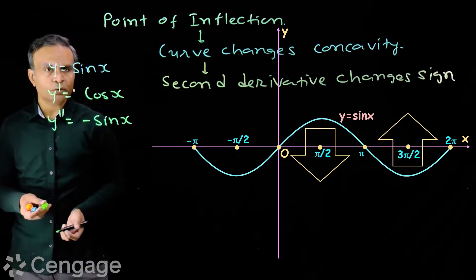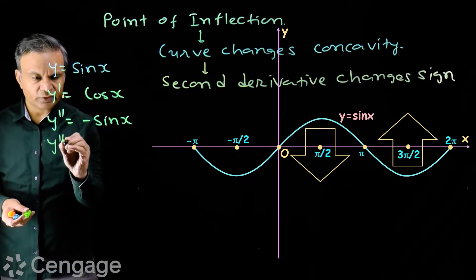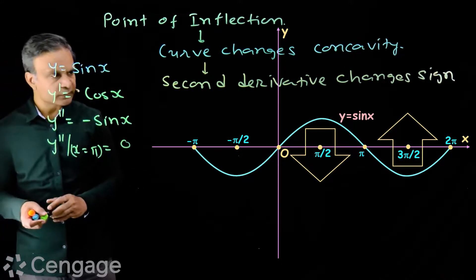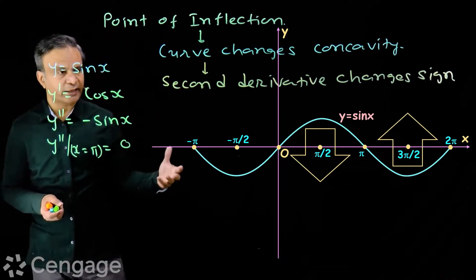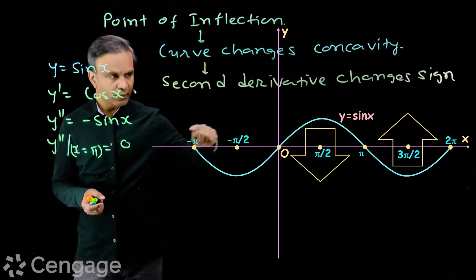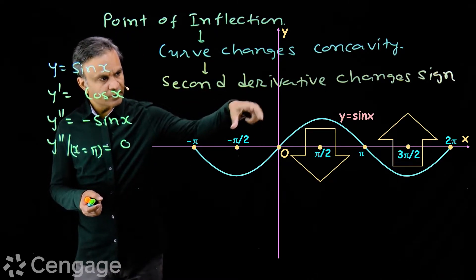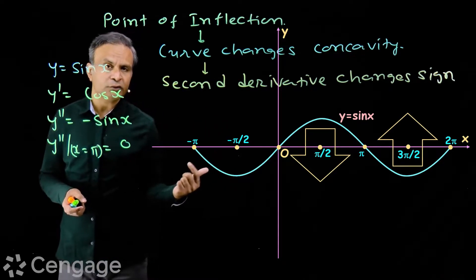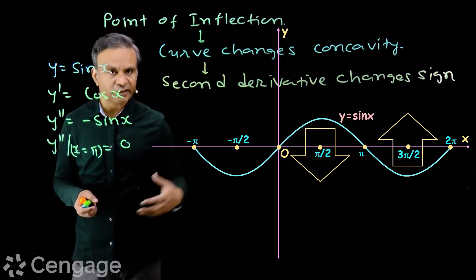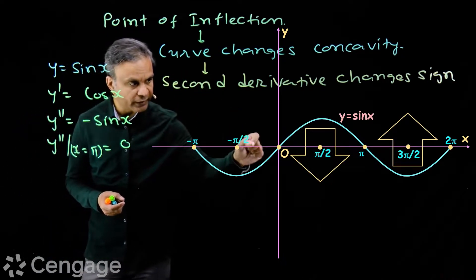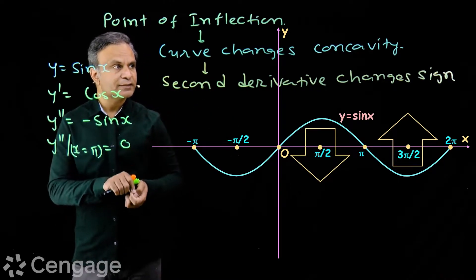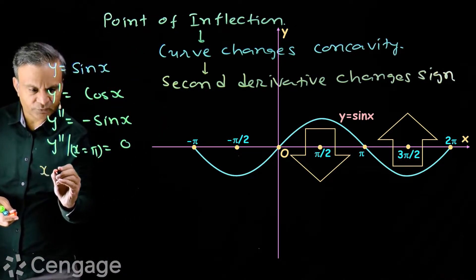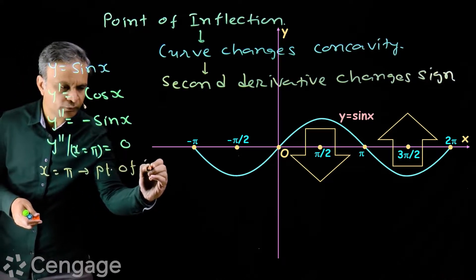At x = π, the second derivative vanishes: y'' = −sin π = 0. Here the second derivative is changing its sign at x = π from minus to plus — from 0 to π the graph is concave downward, and from π to 2π the graph is concave upward. So x = π is a point of inflection, where the curve changes its concavity and the second derivative changes its sign.